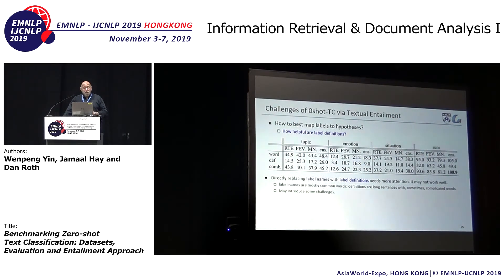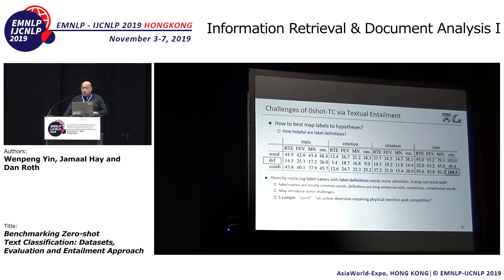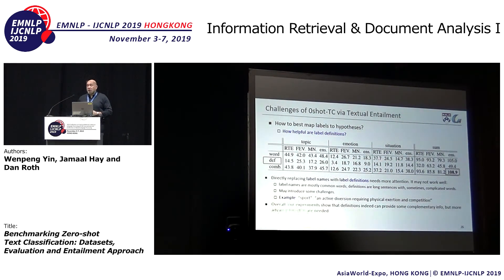There are many challenges I want to highlight, particularly how to map labels to hypotheses. We used two approaches: the label word itself, or taking the definition into account. Using definitions isn't trivial — for the label 'sport,' the WordNet definition is 'active diversions requiring physical exertion and competition,' which is quite complex. Together, both approaches do better than each one alone, and this is something worth thinking about.